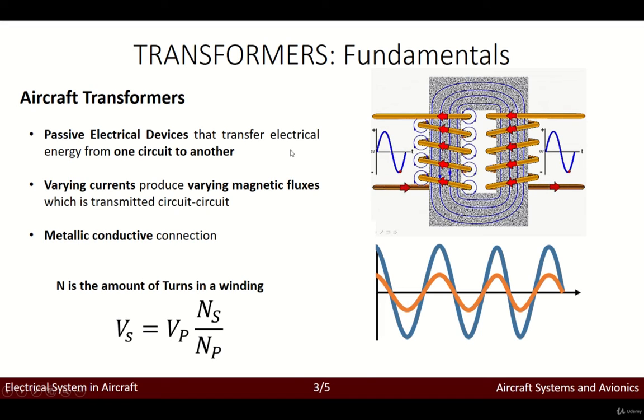So this means that by varying our current, as you can see over here this is the signal of our current, we are actually able to produce a magnetic flux and a varying magnetic flux which is transmitted through this metallic conductive connection.